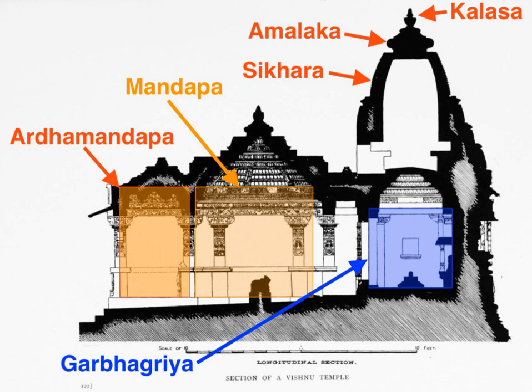There may be further mandapas or other buildings, connected or detached, in large temples, together with other small temples in the compound. Hindu temple architecture reflects a synthesis of arts, the ideals of dharma, beliefs, values and the way of life cherished under Hinduism.